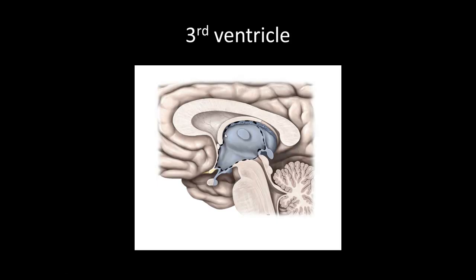From the foramen of Monroe, cerebrospinal fluid flows into the third ventricle, outlined here with a black dotted line. The next structure is the thalamus, part of the diencephalon — this round structure jutting out at us. The thalamus is a major relay for all ascending sensory information except olfaction, and it regulates motor function among other things.